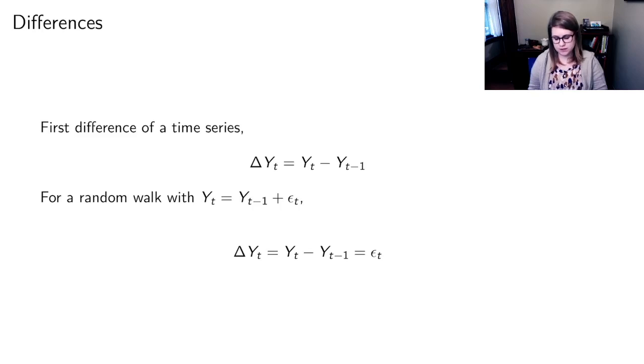We're also going to define a difference. We can have a first difference of a time series, defined as ΔYt which would be the time right now minus whatever was going on the previous time step. And you could have second differences or a 12 unit difference for a year ago.